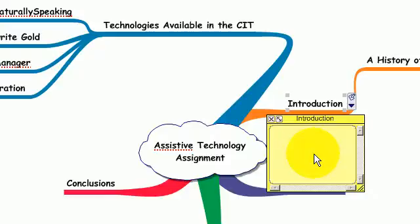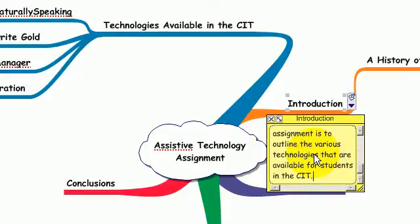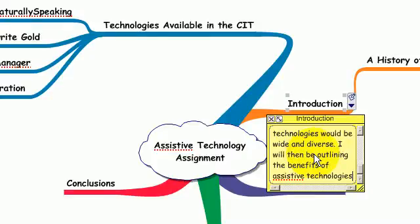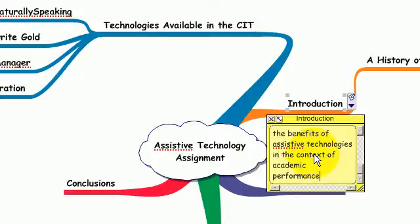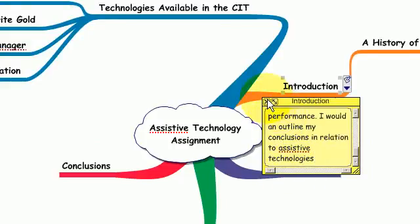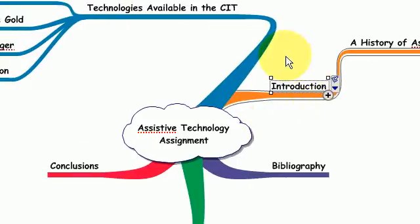But the purpose of this assistive technology assignment is to outline the various technologies that are available for students in the CIT. These technologies would be wide and diverse. I will then be outlining the benefits of assistive technologies in the context of academic performance. I will then outline my conclusions in relation to assistive technologies. Now again, I don't want you to focus on the content, it's just the function of the mind map and what you can do with it.